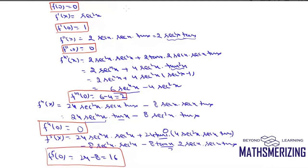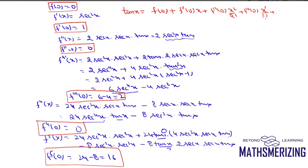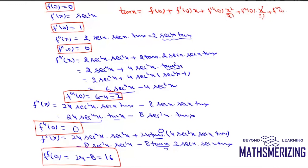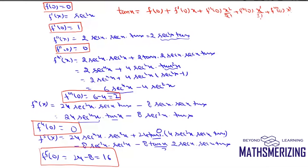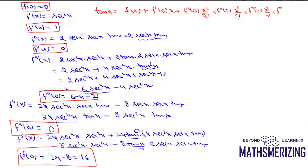Using the Maclaurin theorem I can write tan(x) as f(0) + f'(0)·x + f''(0)·x²/2! + f'''(0)·x³/3! + f⁴(0)·x⁴/4! + f⁵(0)·x⁵/5! and this series continues up to infinite.